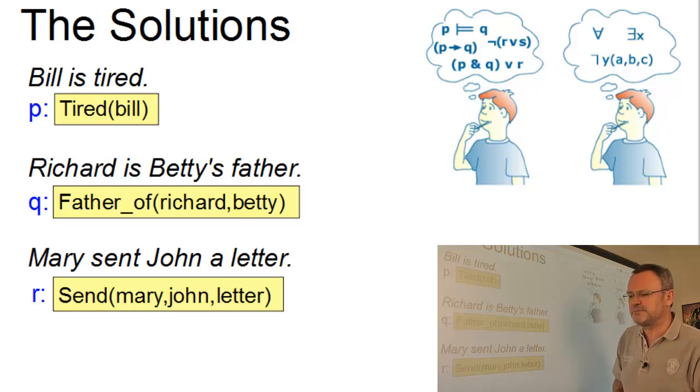The only difference between them was that the number of arguments was different. Tired(Bill), a one-place predicate, tired. Father-of(Richard, Betty), father-of is a two-place predicate. Send(Mary, John, letter), send is a three-place predicate.